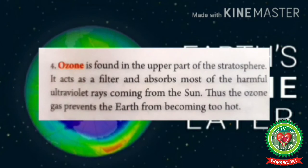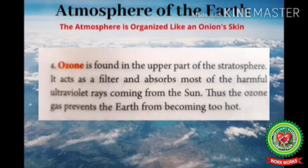Ozone is found in the upper part of the stratosphere — the layer of the earth's atmosphere above the troposphere. It acts as a filter and absorbs most of the harmful ultraviolet rays coming from the sun. Thus ozone gas prevents the earth from becoming too hot. A hole in the ozone layer is the main reason for the increase of earth's temperature and hence creates an imbalance in the earth's climatic conditions.